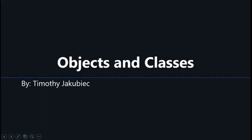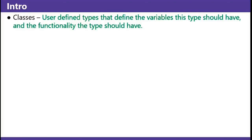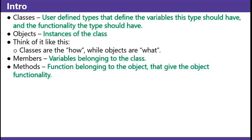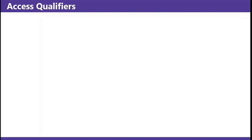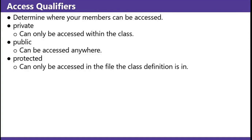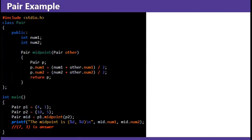Hello and welcome back to Jakubication. This is a video about objects and classes. A class is a user-defined type that defines the variables this type should have and the functionality the type should have. Objects are instances of the class. Think of it like this: classes are how, while objects are what. Members: variables belonging to the class. Methods: functions belonging to the object that give the object functionality. Access qualifiers determine where your members can be accessed: private — can only be accessed within the class; public — can be accessed anywhere; protected — can only be accessed in the file the class definition is in. Pair example: this defines a class with two numbers and a midpoint method that determines the midpoint between two pairs. You take the midpoint between (4,1) and (10,5) and you end up getting (7,3).